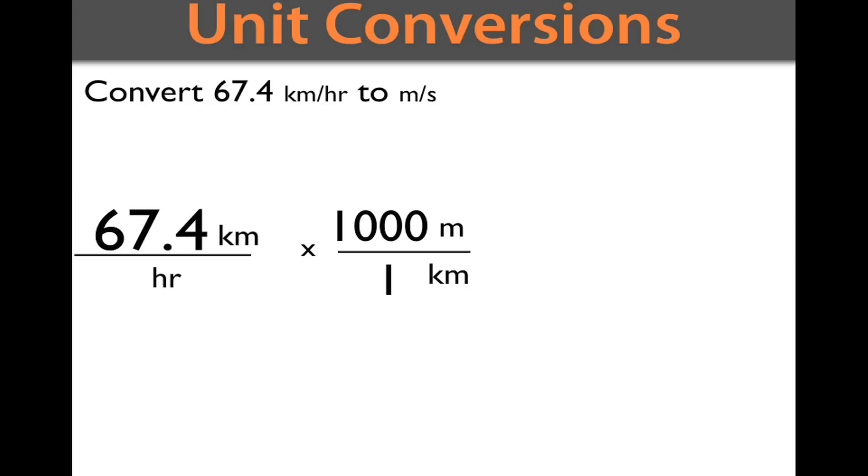Remember in the previous videos how we've said if you divide T by T, it equals one. Or if you have five divided by five, it equals one. A ratio is a similar thing where 1,000 meters is the same as one kilometer. So, we're really not adding anything new. As you can see, the kilometers now cancel off.